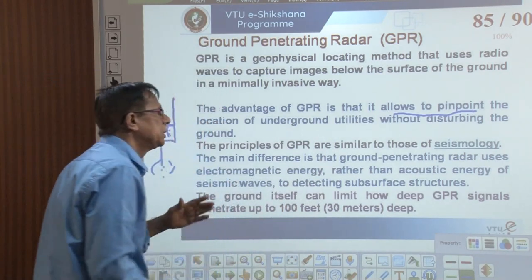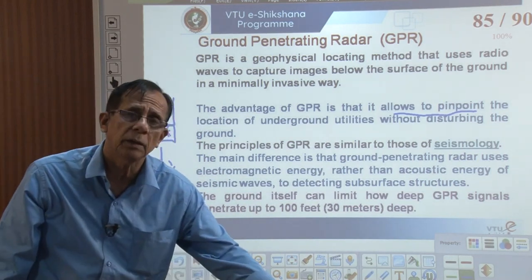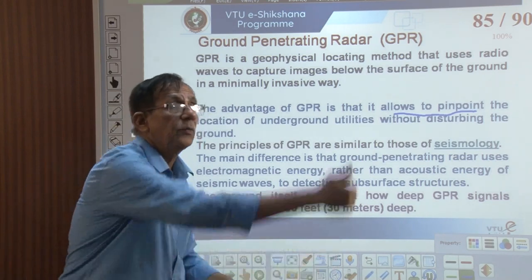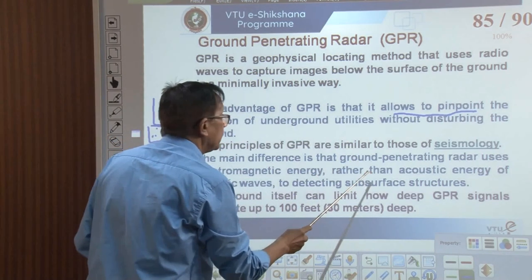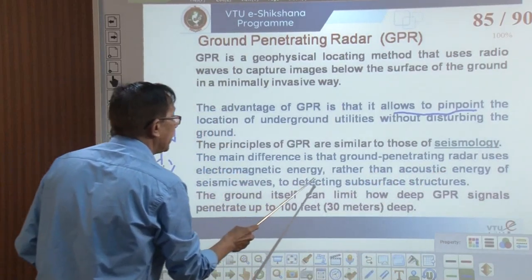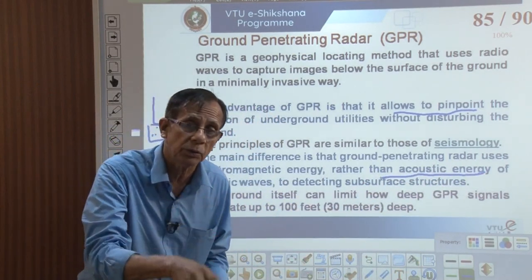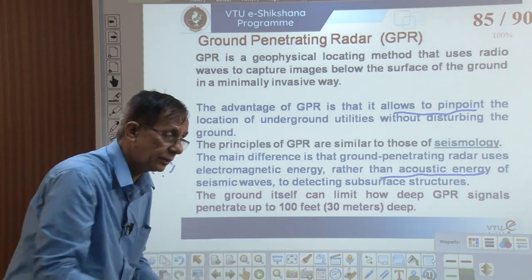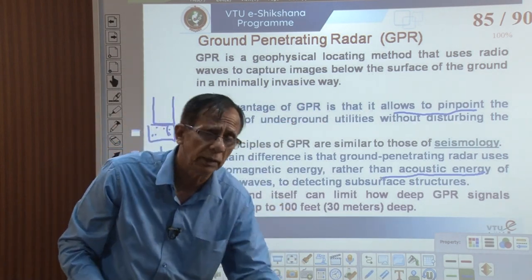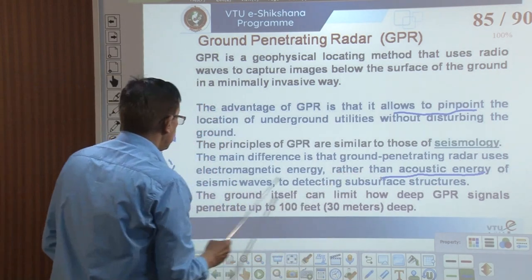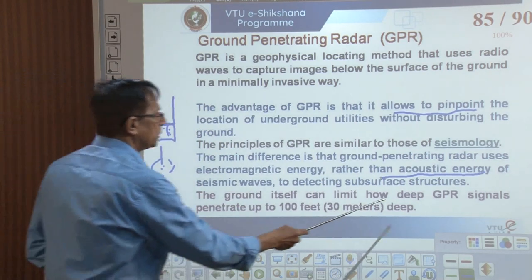The principle of GPR is similar to that of seismology. We send signals into the ground — they hit a layer, rock, or material, get reflected, and are recorded. The main difference is that ground penetrating radar uses electromagnetic energy rather than acoustic energy. In seismic, we create artificial shocks — acoustic energy that travels, hits the layers, and gets reflected back. Whereas GPR uses electromagnetic energy to detect subsurface structures.